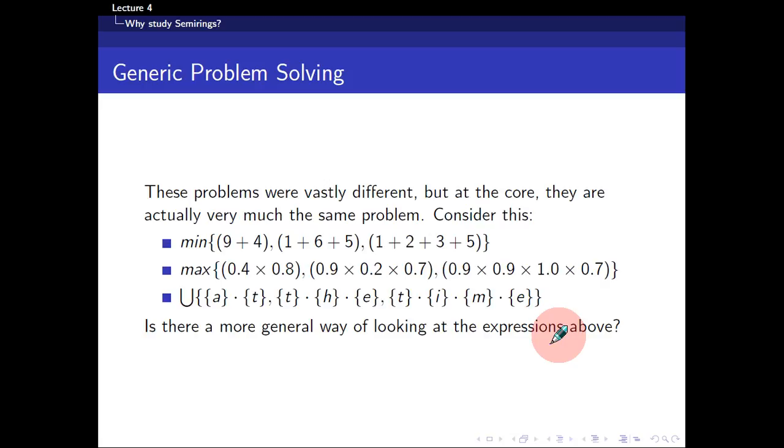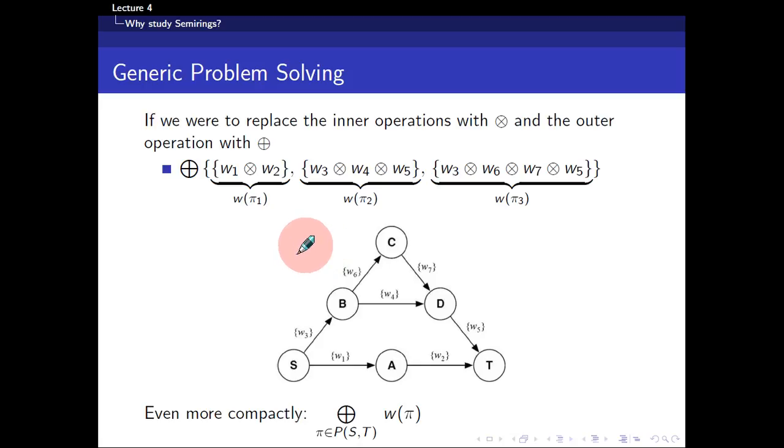Suppose if I were to rewrite all the operations given. For the first one, you'll be taking the minimum throughout the three paths. The second one, you'll be taking the maximum across all the possible probabilities. And the third one is to take the union among all the possible paths, concatenated letters of the paths. So is there even more general way of looking at expressions? Because it feels like there is some sort of similarities between these three problems, algebraically speaking. What's the more general way? Well, it turns out that there is. You can actually replace all the inner operations with ⊗ and the outer operations with ⊕.